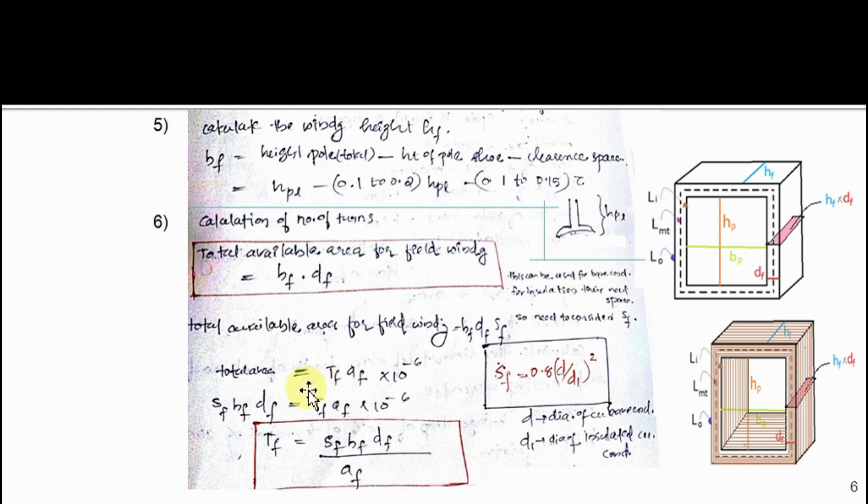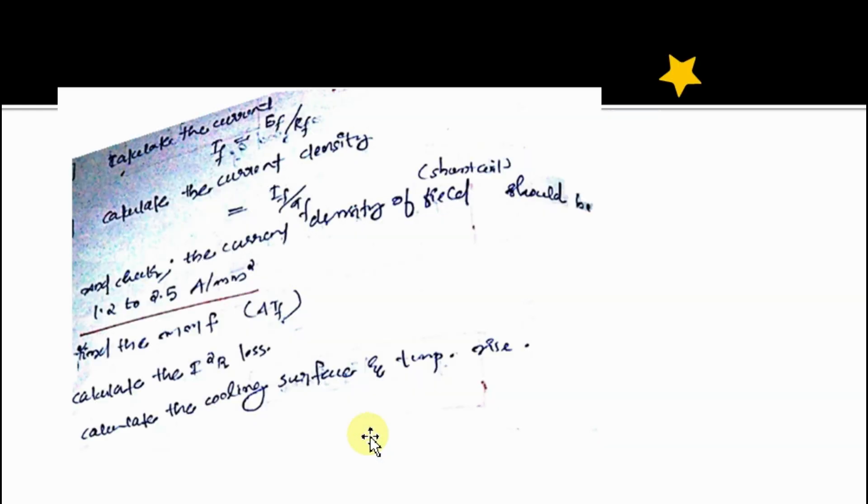To calculate current, divide emf by resistance. To calculate current density, divide current by af. It should lie between 1.2 to 2.5. Find the mmf: it is tf × if.